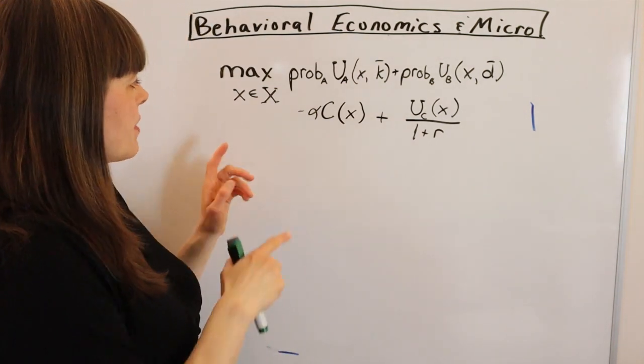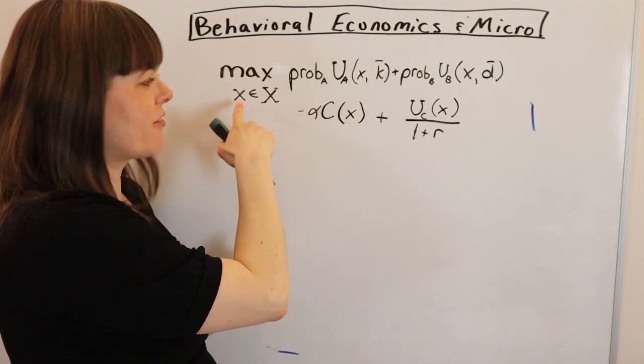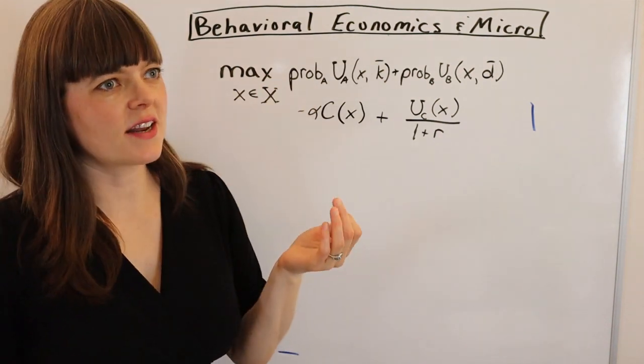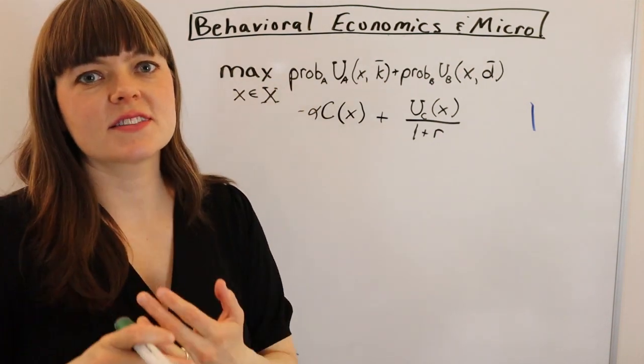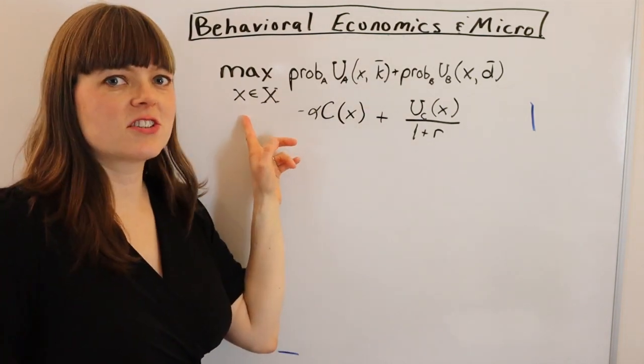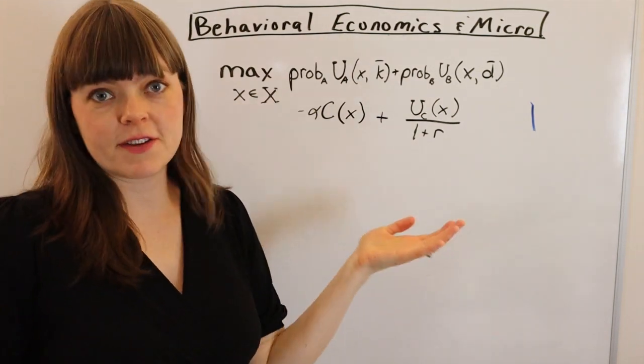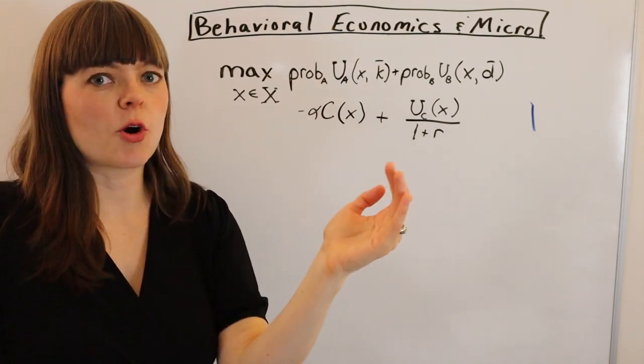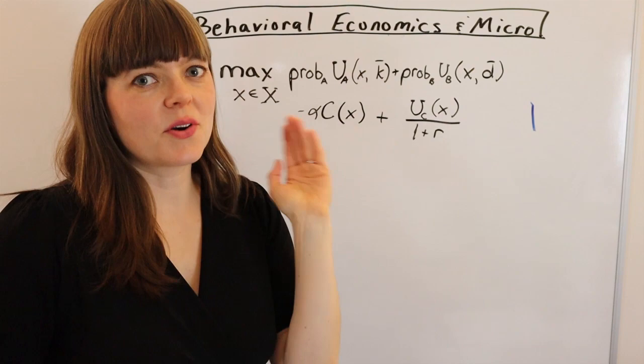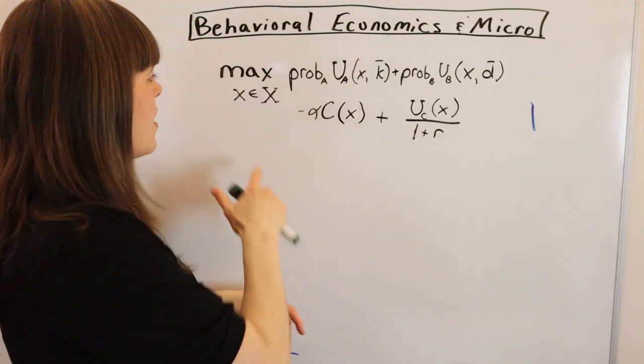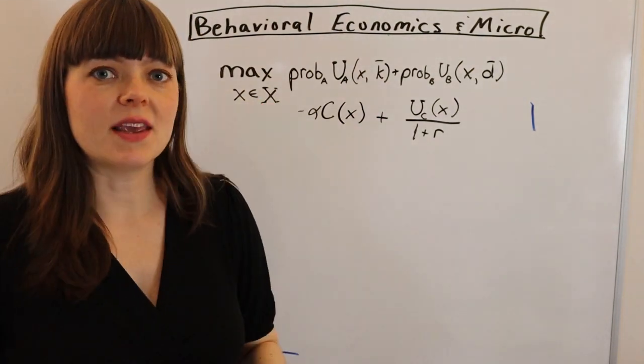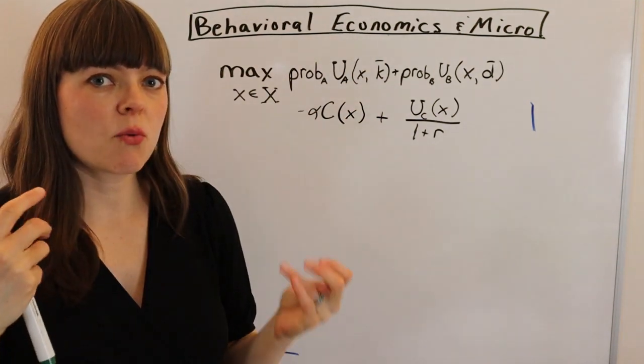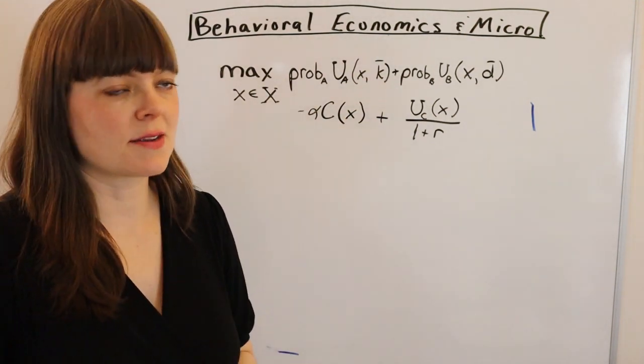So to begin with, we have our choice variable, whatever that is, and that's part of a choice set. Oftentimes the choice set is somewhat obvious. Like if you're choosing a percentage of your budget to devote to coffee, for example, then the choice set has to be between zero and a hundred percent. You know that there's restrictions on what your choice set can be, and of course behavioral economics may modify what we perceive our choice set to be.